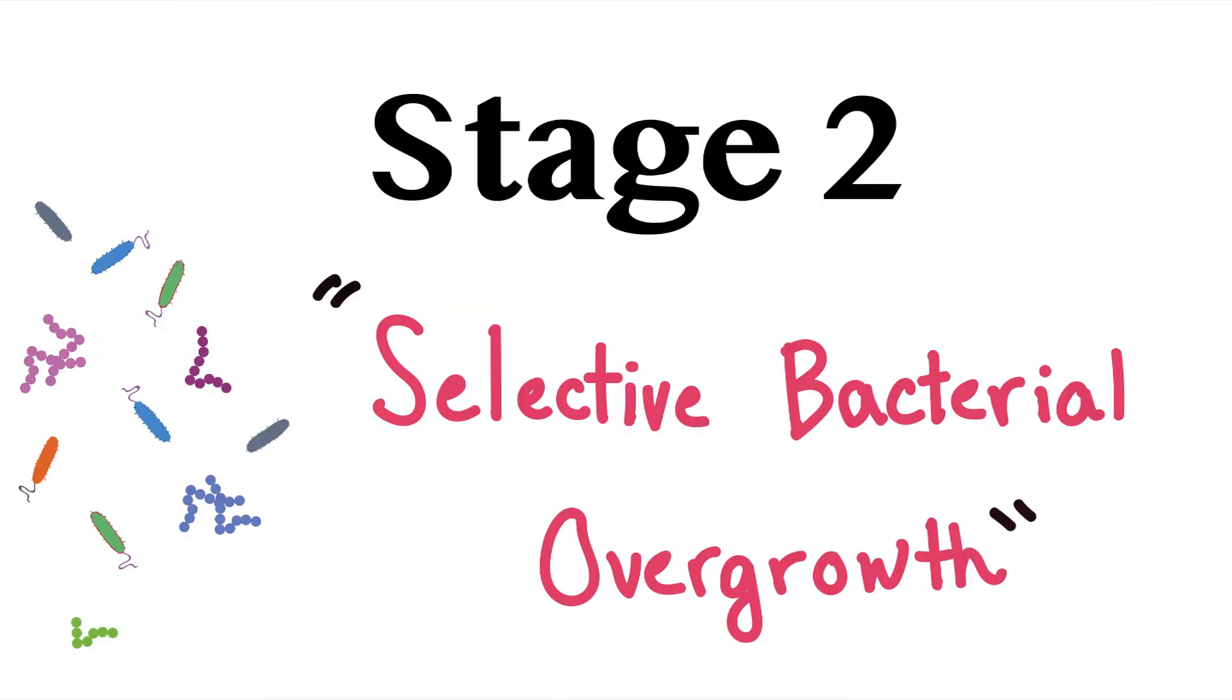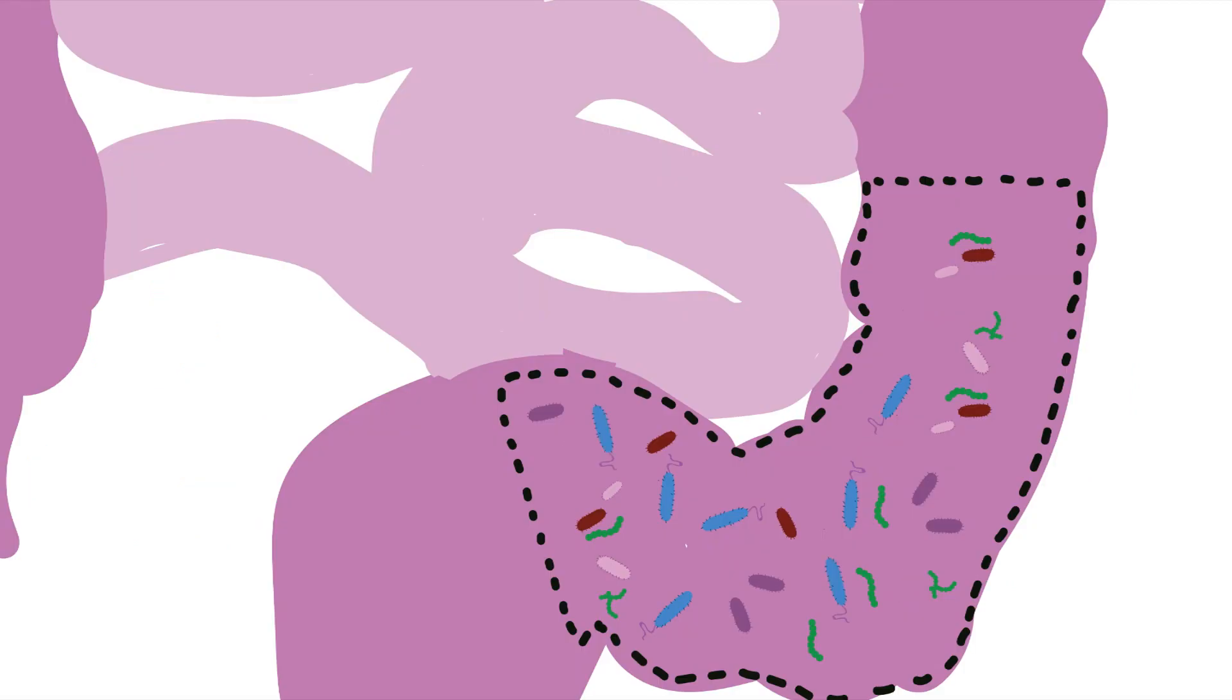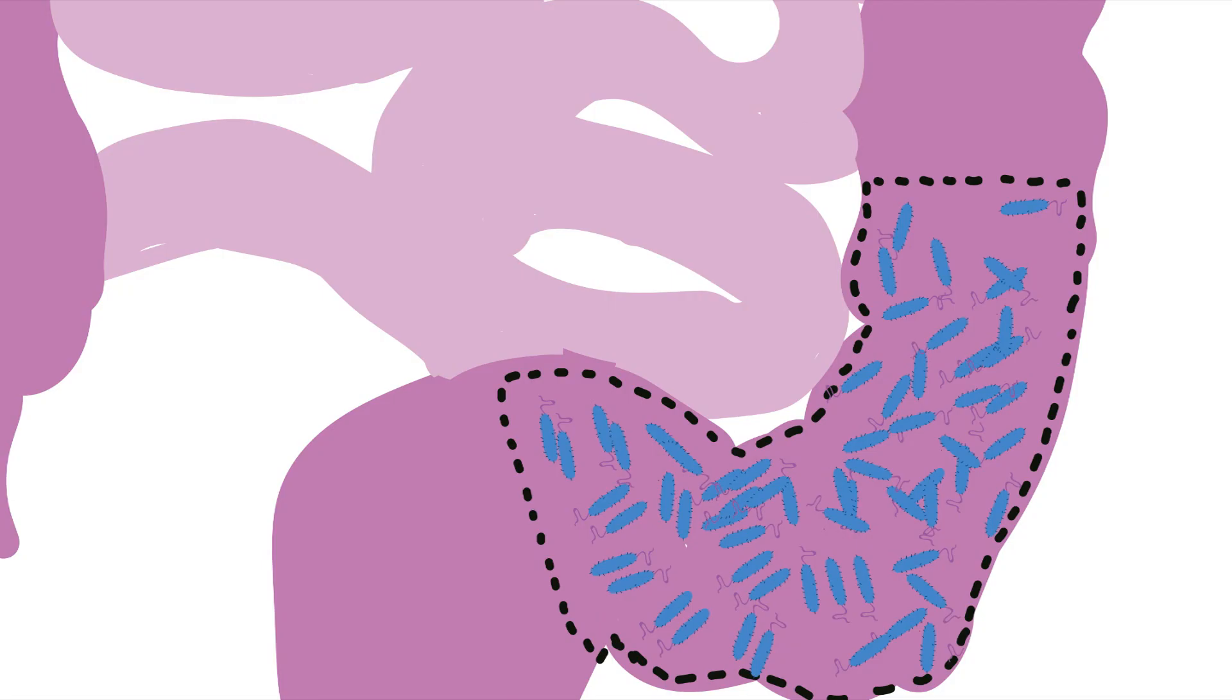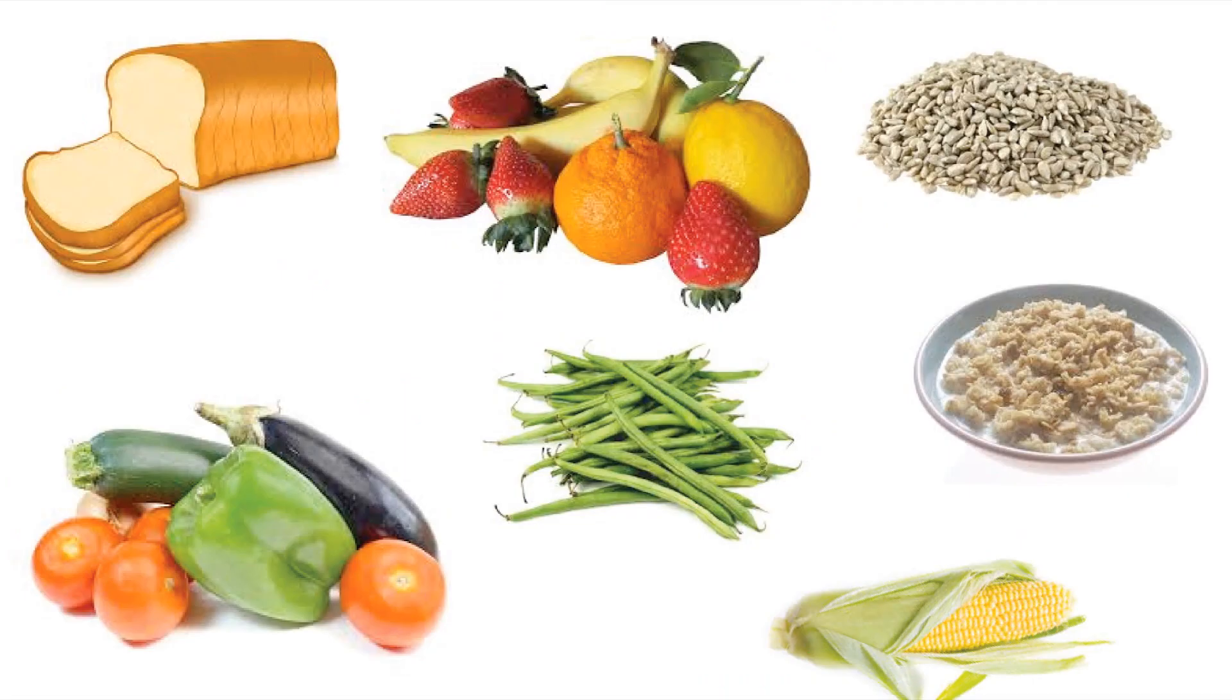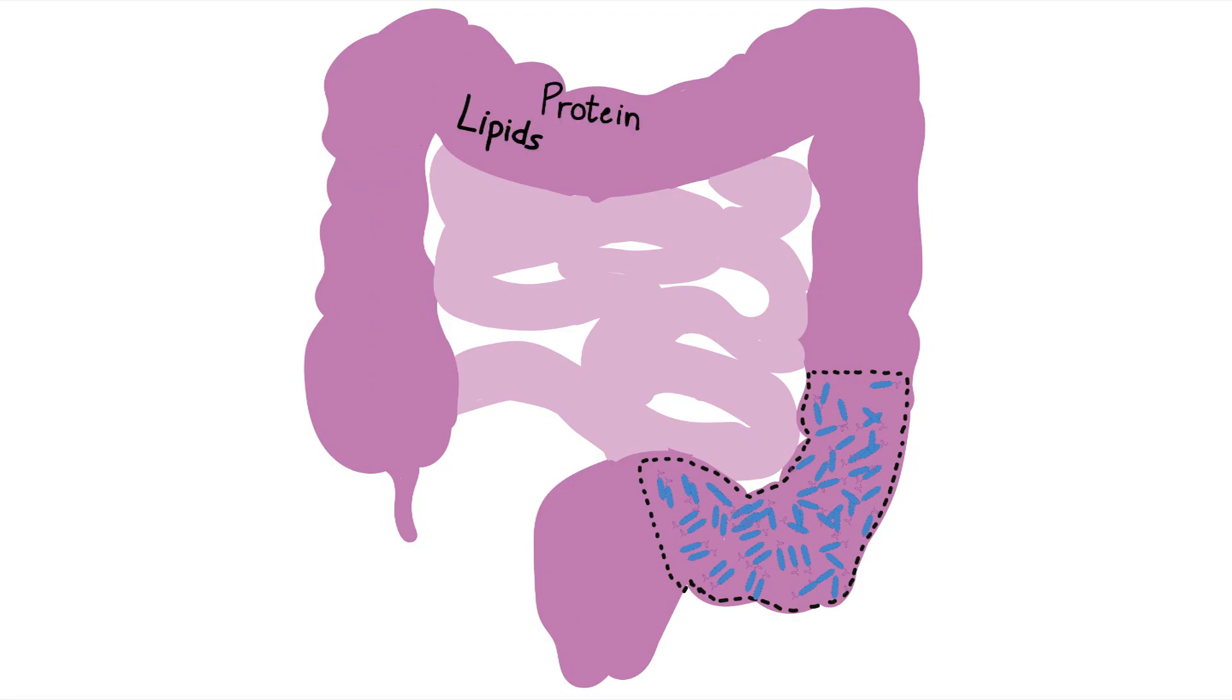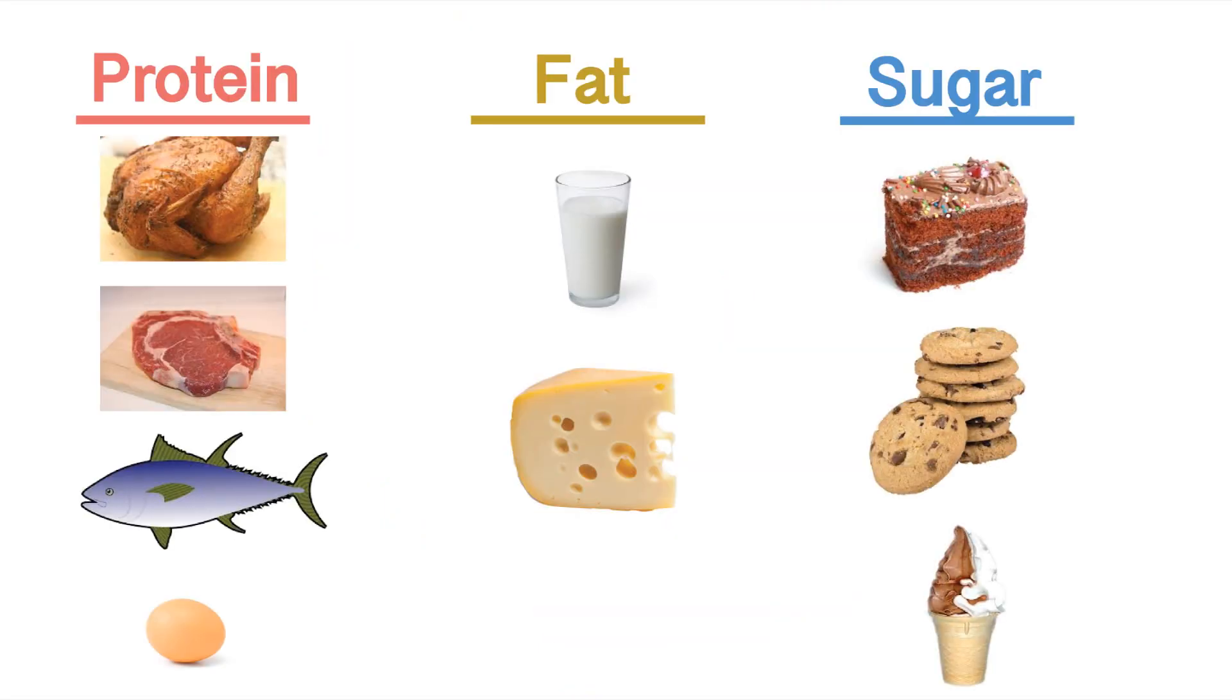Selective bacterial overgrowth. The low fiber environment selectively grows bacteria that are able to thrive in low fiber conditions. Such bacteria like E. coli are especially tolerant of low fiber environments and are able to outgrow other bacteria. They weren't able to outgrow before because they had to compete with other populations that were living on the high fiber diet. These low fiber-tolerant bacteria feed on other macromolecules like protein and lipids, which through your current diet are quite plentiful.